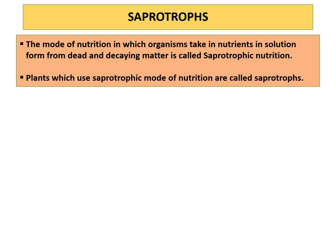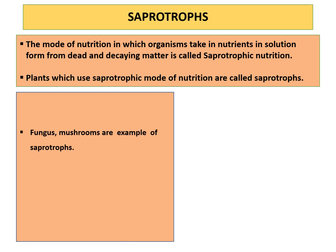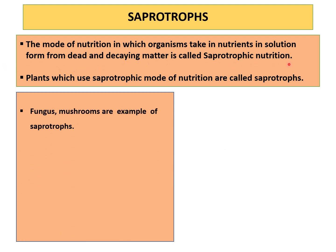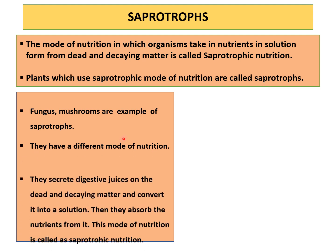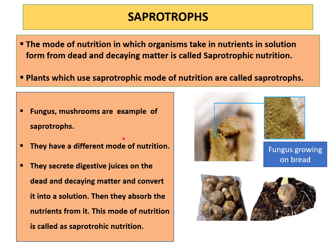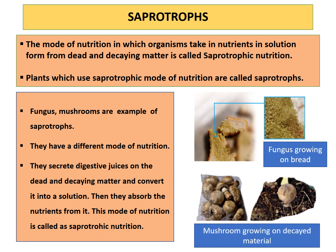Now we will learn about saprotrophs. The mode of nutrition in which organisms take in nutrients in solution from dead and decaying material is called saprotrophic nutrition. Plants which use this mode are known as saprotrophs — for example, mushrooms and fungi. You must have seen sometimes on bread in your fridge some green patches or a white cloudy mass. These are fungi, and they show saprotrophic mode of nutrition. They secrete digestive juices on dead and decaying material, convert it into solution, and then absorb nutrients from it.